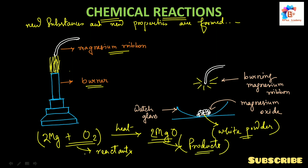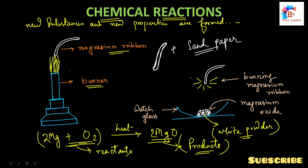Products and reactants will be completely different. One thing to note: on the surface of the magnesium ribbon there is a coating of magnesium oxide, and we need to remove this coating using sandpaper. Also, when we burn magnesium ribbon, it produces a very bright light which is dangerous for our eyes.